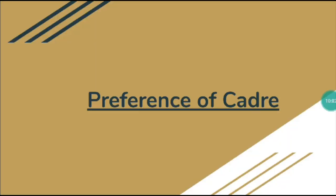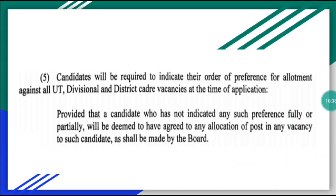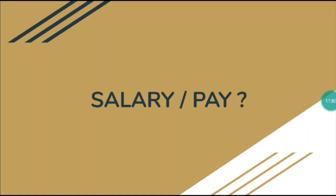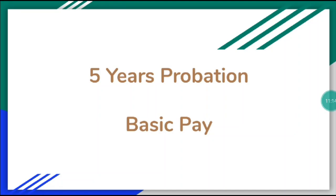When applying, you will have a preference option. If you don't indicate your preference, it will be considered that you are ready for any posting. Regarding salary, this post is for five years on probation — you will get a basic pay — and after five years you will get a permanent job.